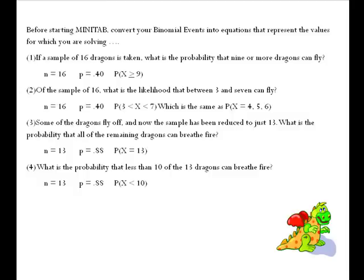Number 2, I want between 3 and 7. Between 3 and 7 is 4, 5, and 6. So the probability of X being greater than 3 but less than 7 is the same thing as saying what is the probability that X equals 4, 5, and 6. In the third one, I wanted to know what's the probability all the remaining dragons can breathe fire? I had a sample of 13 — what's the probability that all 13 breathe fire? That means X equals 13.